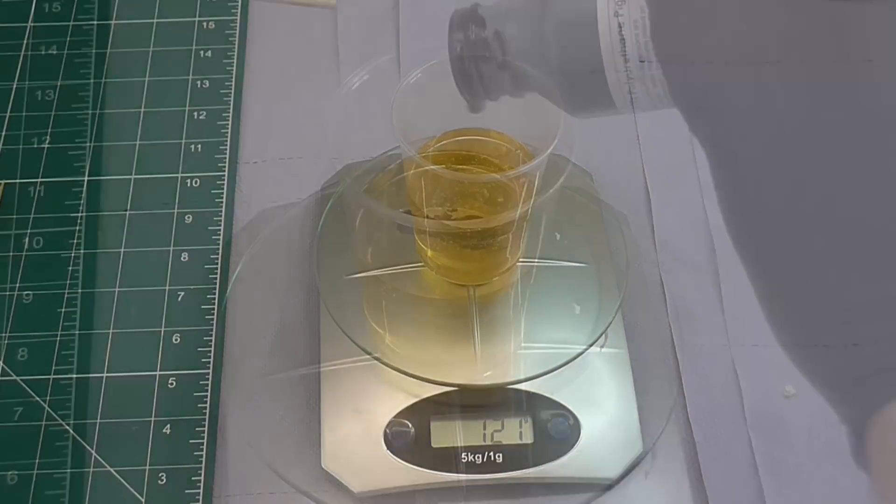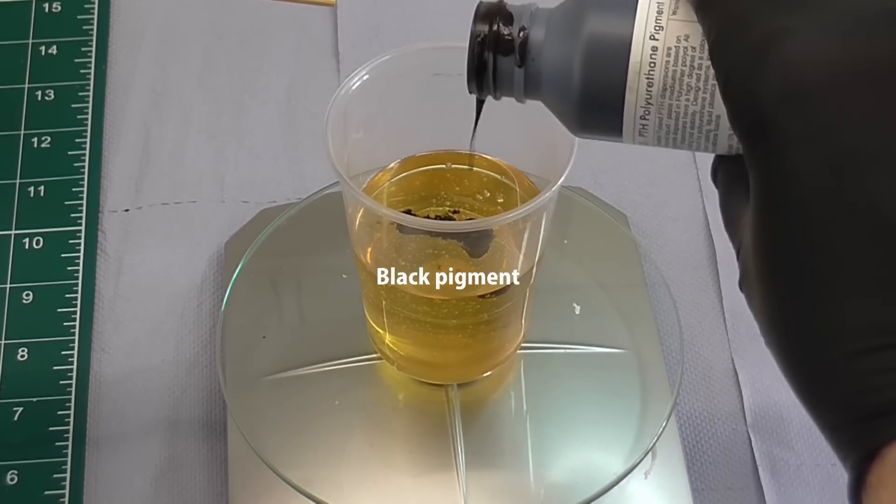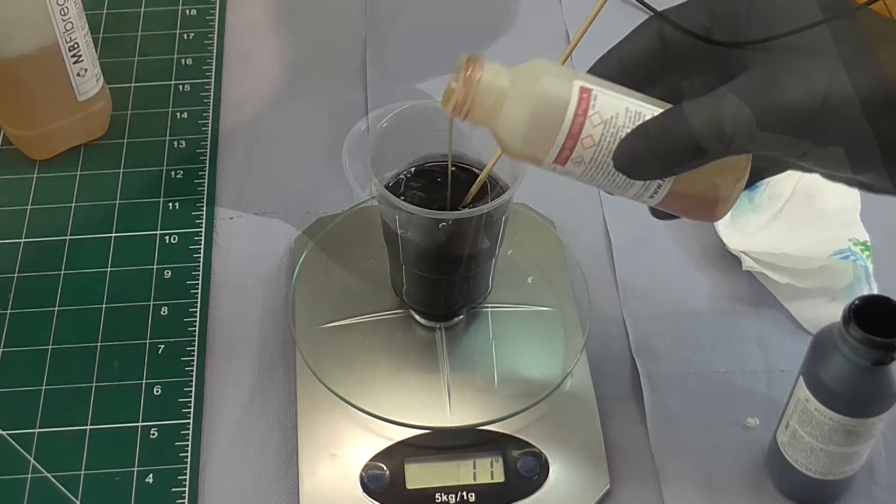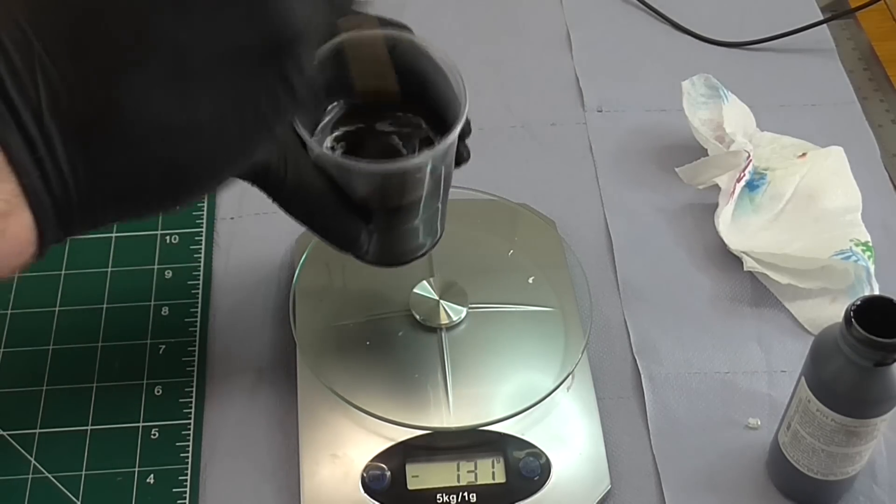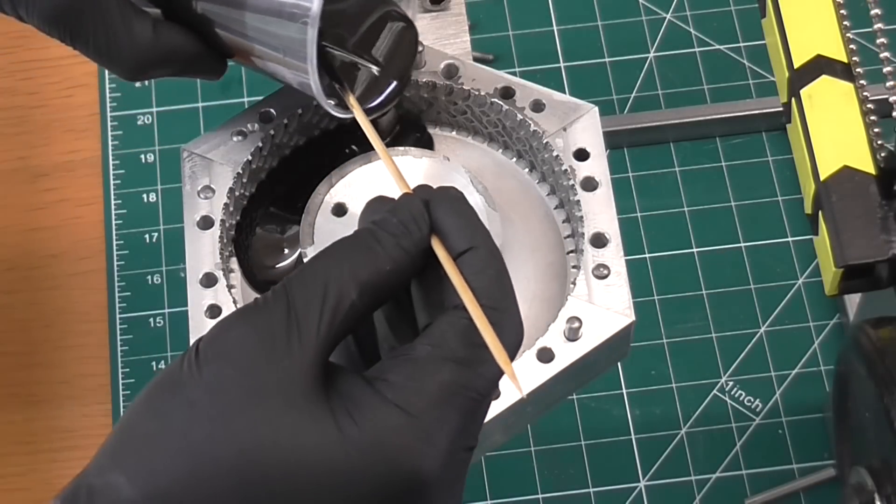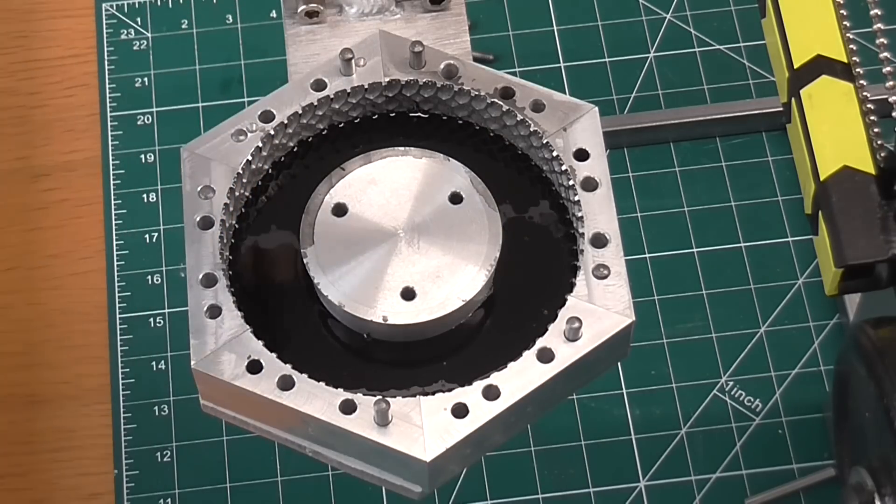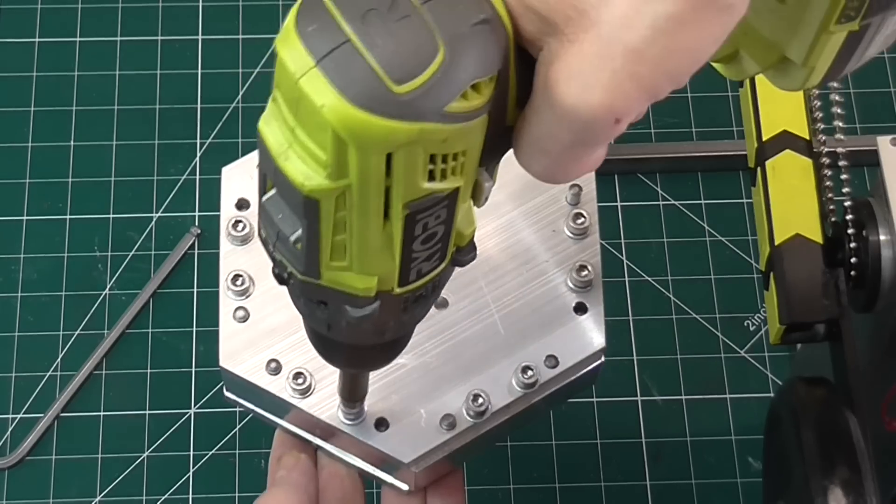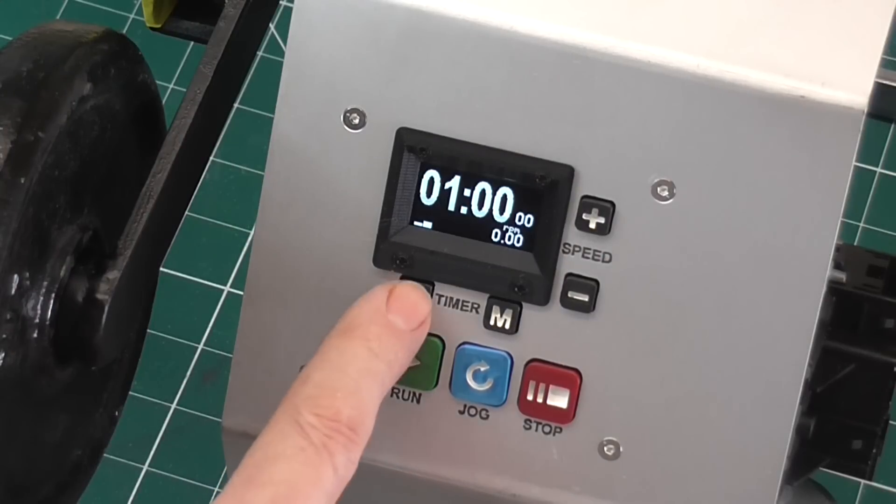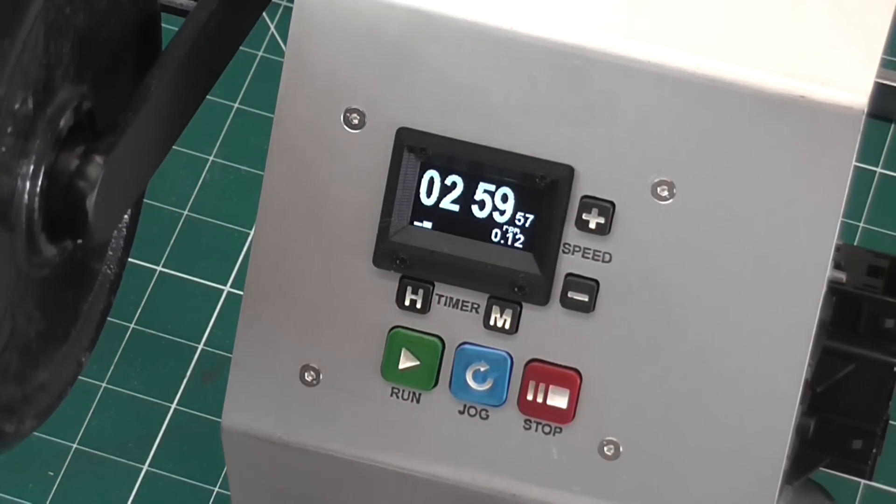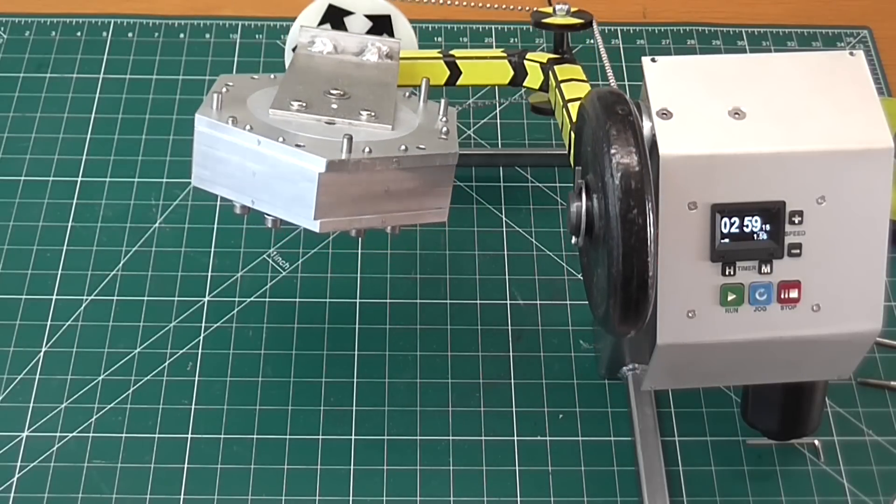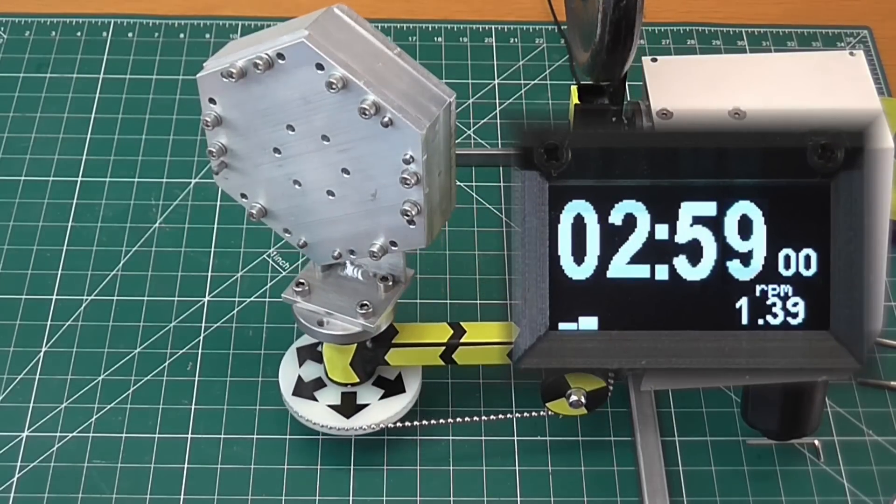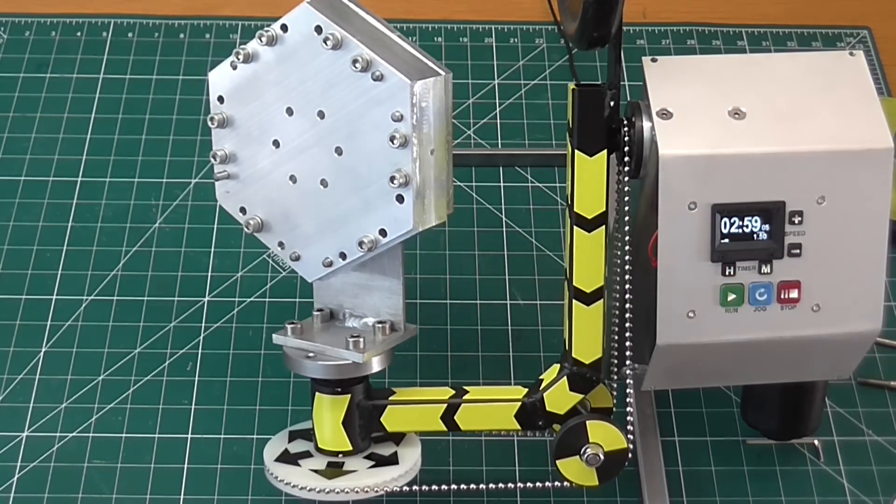I'm using a two-part polyurethane rubber. Some experimentation with the volume of resin and speed of rotation is required. I actually found this speed was too slow. The machine will run between about 1 and 12 rpm. Around 7 rpm worked much better.